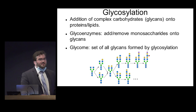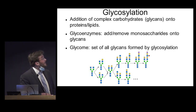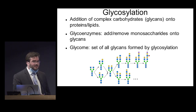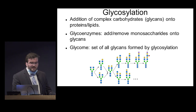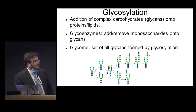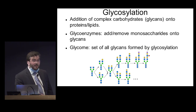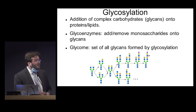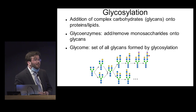Glycosylation is a very important biological process in which complex carbohydrates known as glycans are added onto proteins and lipids. This is a very ubiquitous biological modification and roughly around 50% of human proteins are glycosylated. You cannot avoid them. And these glycans come about by a series of actions of glycoenzymes which are responsible for adding and removing monosaccharides from these glycan structures, and they act in very complicated non-template driven processes.